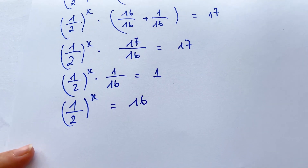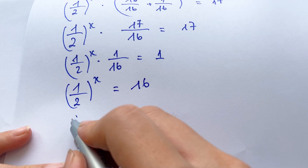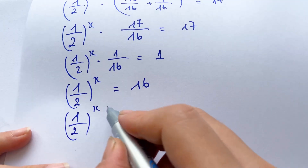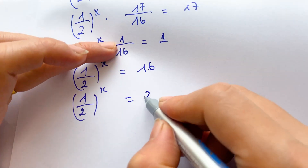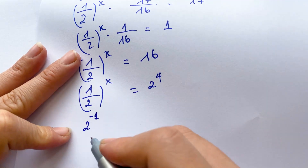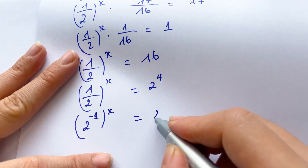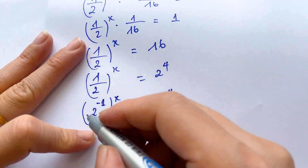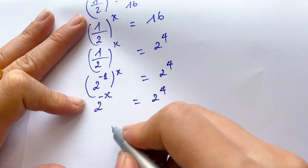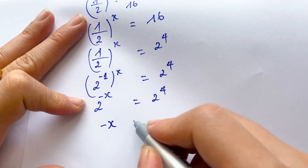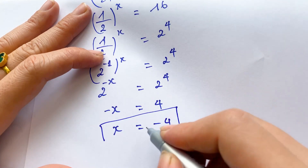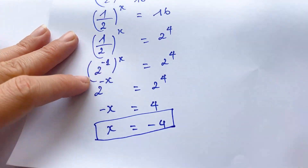So therefore on the right-hand side we can have 16, and so (1/2)^x equals 2^4. You can rewrite (1/2) as 2^(-1), so 2^(-x) equals 2^4. Therefore minus x equals 4, so x equals minus 4. That's the value of x.